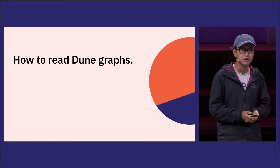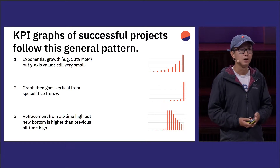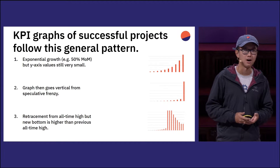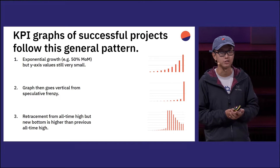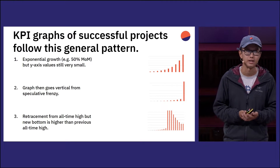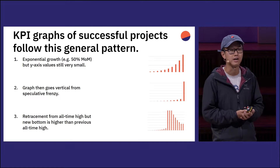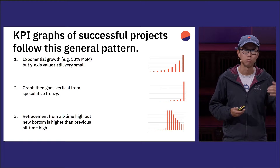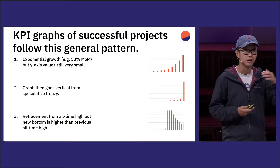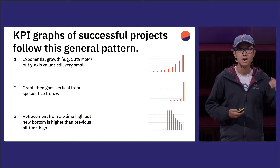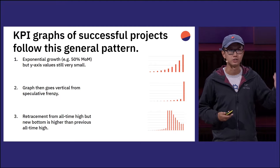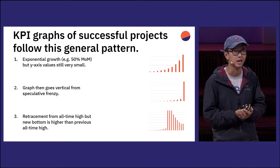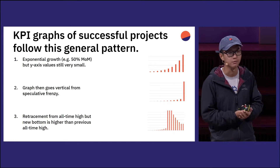So how do you read Dune graphs? The general trend I see of successful projects, if you look at the Dune data, is first they start out with really exponential growth — like 50% month over month. But the y-axis is still very tiny, which is why people on crypto Twitter and others just kind of write off this space or this project, because it's just rounding error and pennies for them.